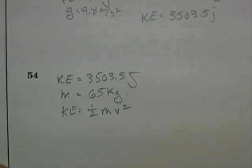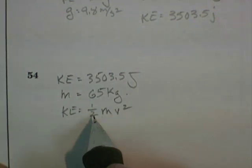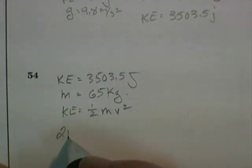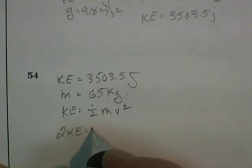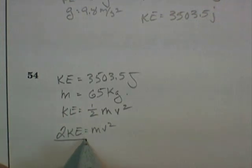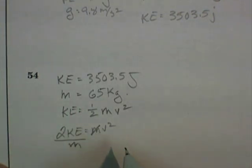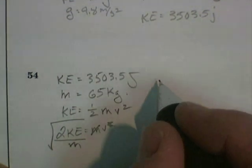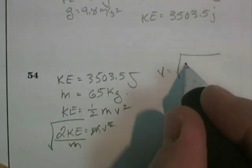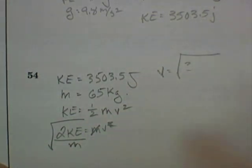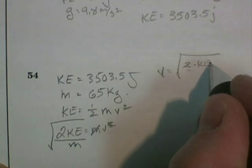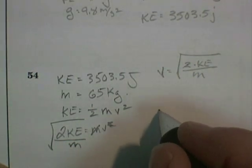Now we have to do the algebra to solve for velocity. So the first thing I do is get rid of the one-half, and I do that by multiplying both sides by 2. 2 times kinetic energy is equal to mv squared. 2 times kinetic energy divided by mass is equal to v squared. And the square root of 2 times kinetic energy divided by mass is equal to velocity.